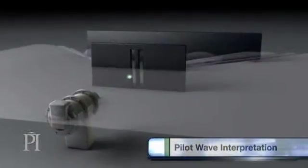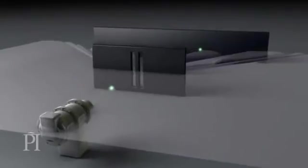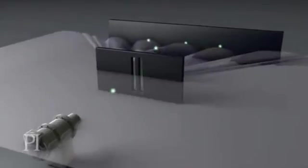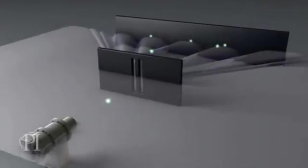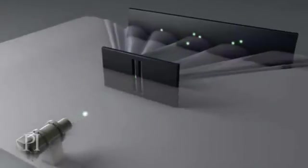The pilot wave interpretation says that electrons are real particles, like tiny, tiny tennis balls guided by an unseen wave. In this case, you can explain why the particle is only detected in one place behind the slits, because there's only one particle. It's this particle.